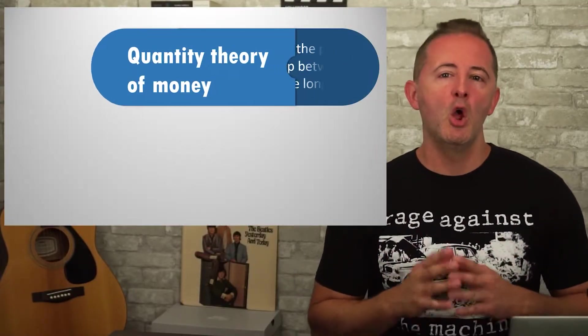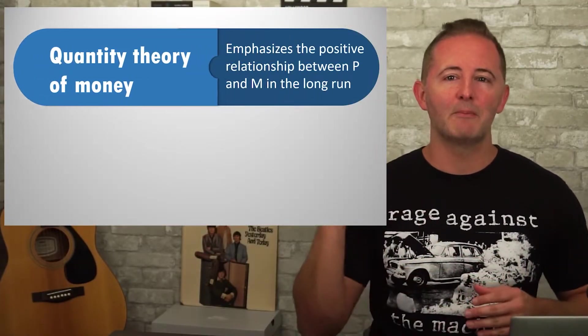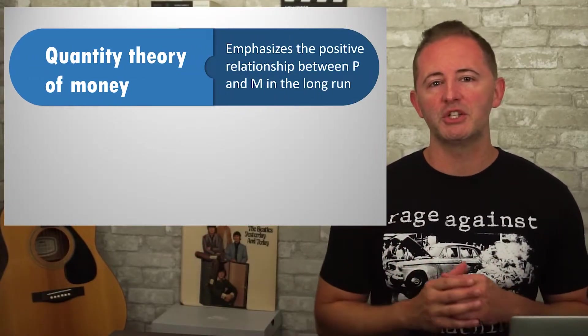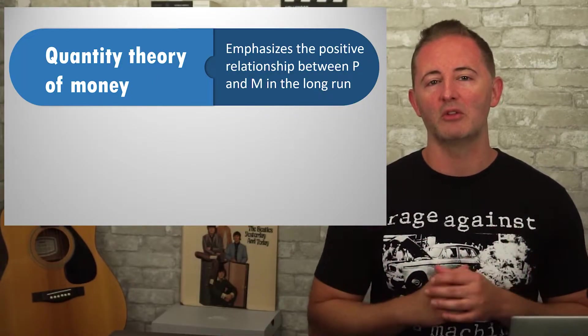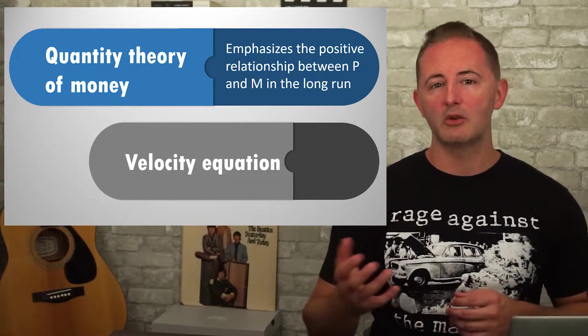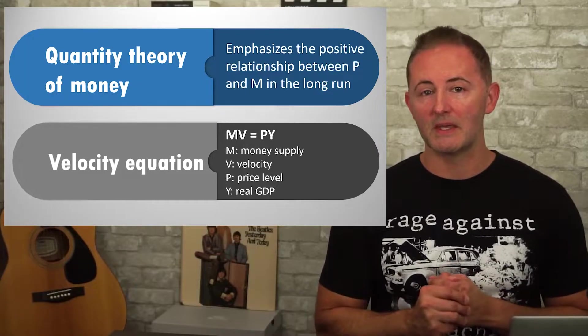In the long run, the growth rate of the money supply determines the growth of the price level, or inflation. This section is all based on the quantity theory of money, which emphasizes the positive relationship between the price level and the money supply, especially in the long run. We'll use the velocity equation to demonstrate this: M times V equals P times Y.